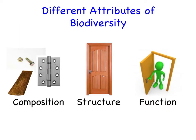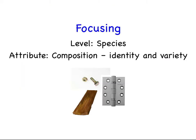For each level of biodiversity there are different attributes. Composition, structure, and function are attributes of biodiversity. Importantly, composition — the kind of base level identity and variety of living things — influences both the structure and function. For example, when we consider a doorway, the wood, nuts, bolts, and hinges represent the door's composition. The structure is how those parts are pieced together, and the function is to allow movement from one room to another. We're going to focus just on species-level diversity and the composition of that biodiversity — the identity and variety of species within a community.